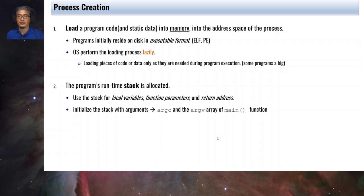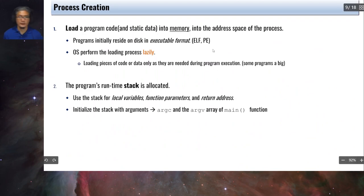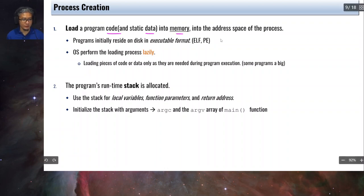Process creation is the primary mechanism when a program comes alive. The general process of process creation begins with loading the program code and the static data into memory — into the address space of the process. Remember that the program is from the disk; when a process is created, the program image is loaded to the address space of the newly created process.